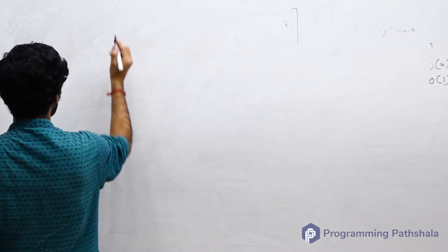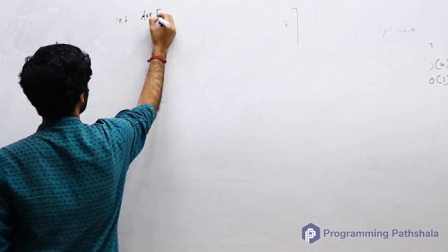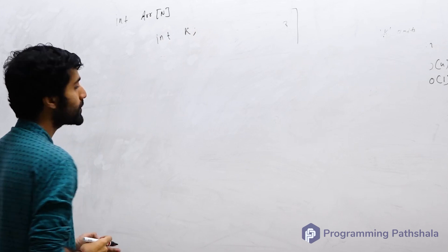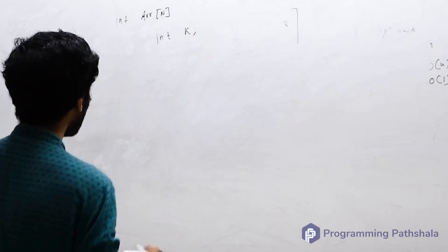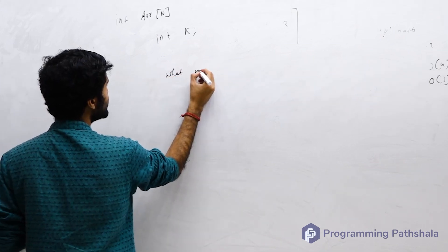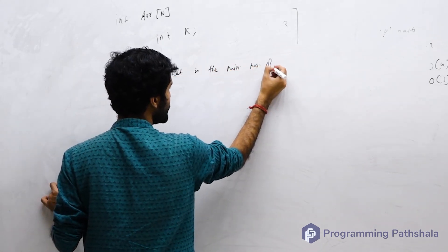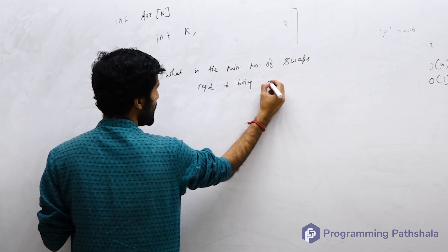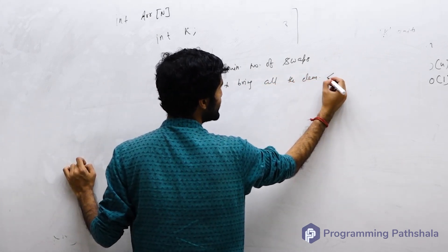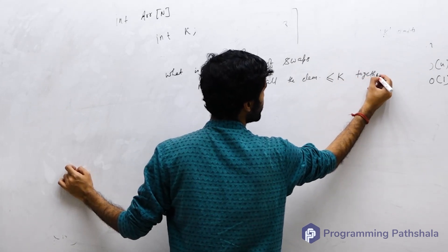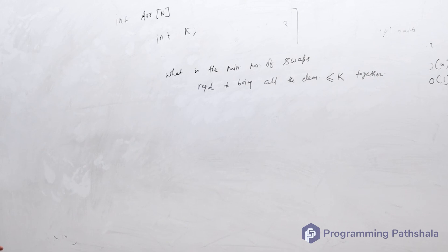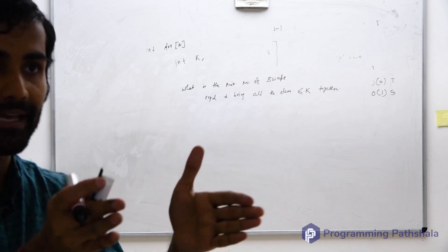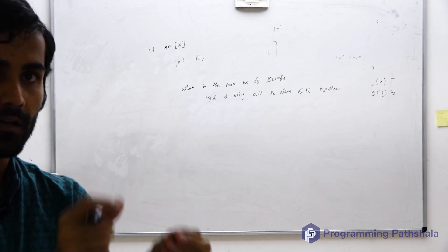Given an array of size n and an integer k, find the minimum number of swaps required to bring all the elements that are lesser than or equal to k together — meaning they should be in the same contiguous subarray.